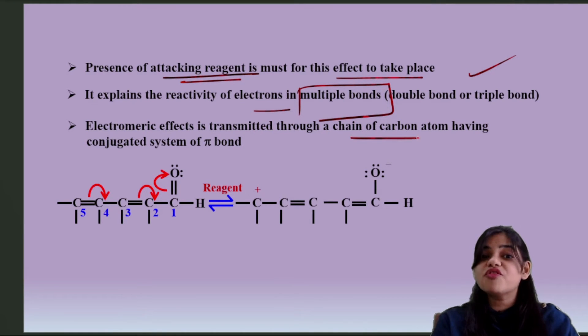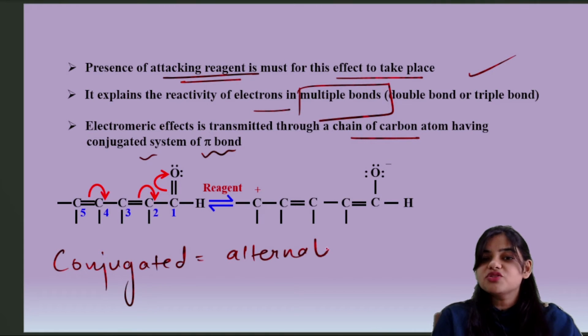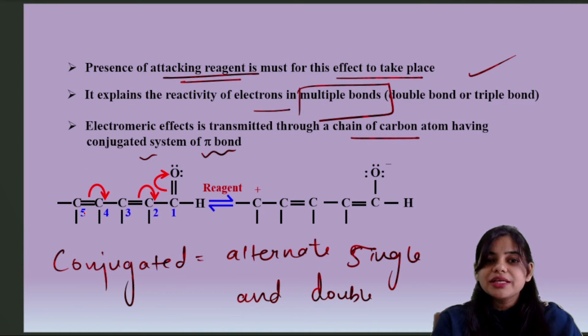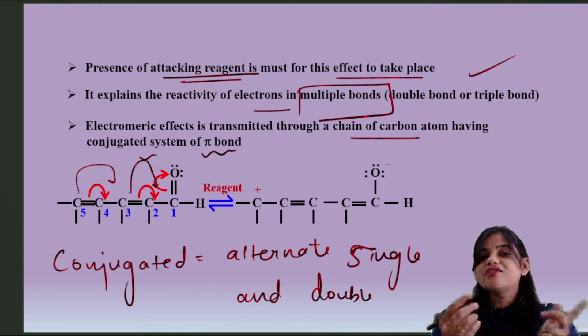What do you mean by conjugated? Conjugated means alternate single and double bond. If there is alternate single and double bond, then this system could be seen in a long chain of carbon. So if you see here, at carbon number one there is a double bond, then between one and two single bond, two and three double bond, three and four single bond, four and five double bond. So if oxygen takes two electrons, then this double bond's electrons shift here, then this between four and five will shift to the next. And if you see the product, oxygen has got the negative charge.